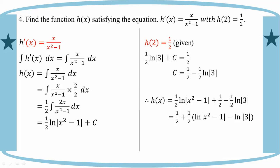So we have one half. One half plus one half ln modulus of x squared minus 1 over 3. That's the final answer for h(x).